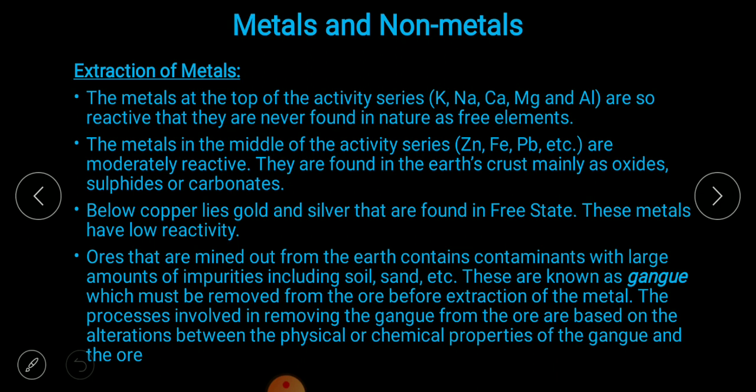Ores that are mined out from the earth contain huge amounts of impurities. Impurities like soil and sand are known as gangue, which must be removed from the ore before extraction of the metal. The process involved in removing the gangue from the ore is based on differences between the physical and chemical properties of gangue and ore. For example, if gangue is present as iron, we can use a magnet to separate the iron particles.